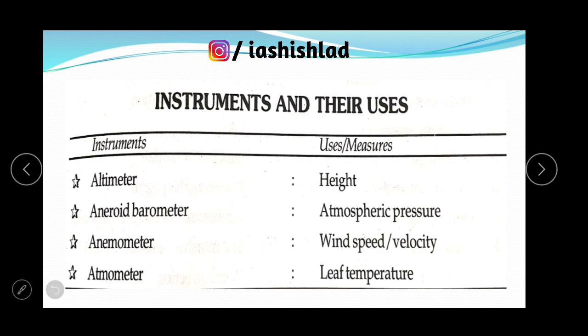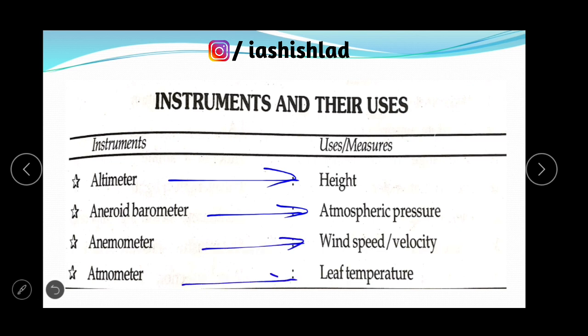Altimeter is used to measure height. Aneroid barometer is used to measure atmospheric pressure. Anemometer is used for wind speed and velocity measurement. Atmometer is used for evaporation measurement.